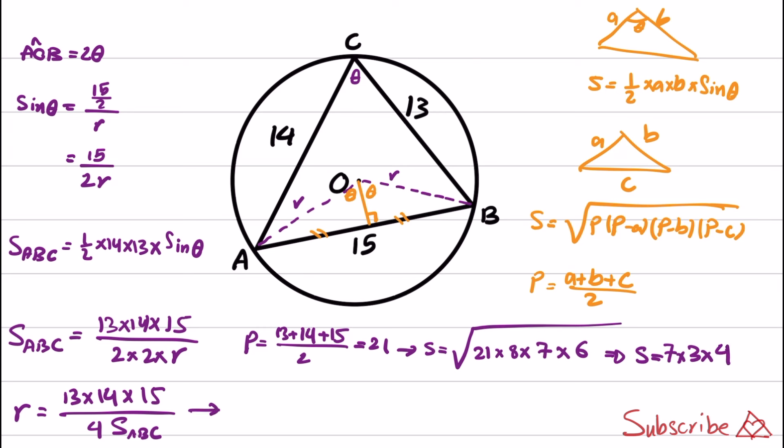Finally, if you replace S here, you will have 13 times 14 times 15 divided by 4 times 7 times 3 times 4. And if you simplify this, you will get 65 over 8.